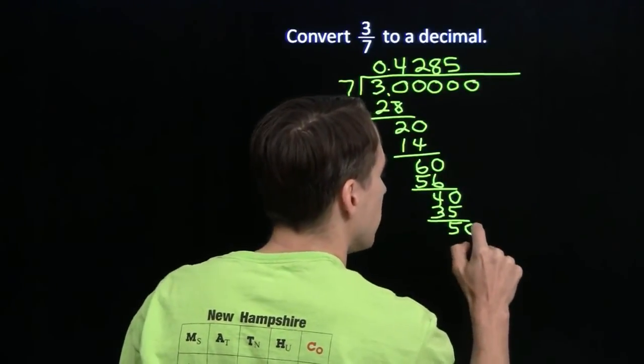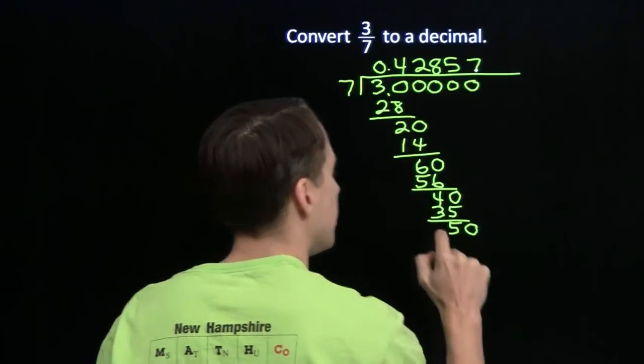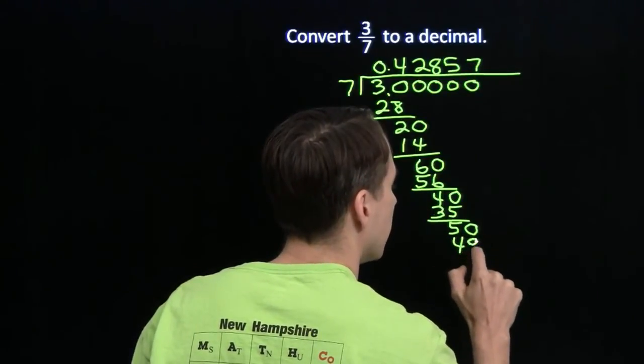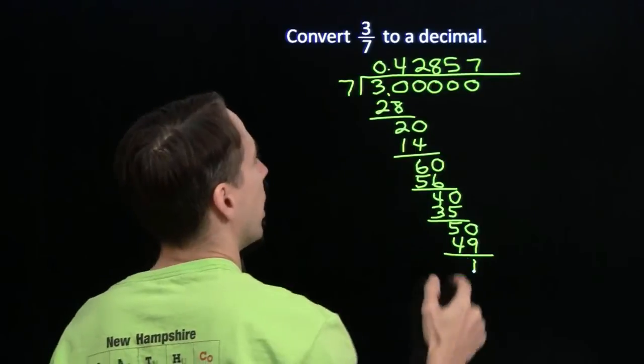We bring down a 0, 7 into 50, that goes 7 times. 7 times 7 is 49, and that gives us 1 left over, still not a repeat.